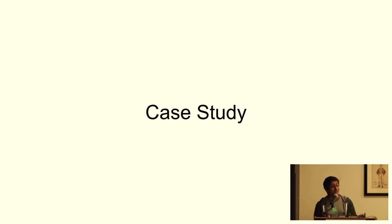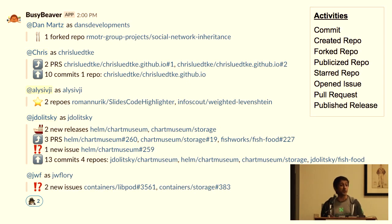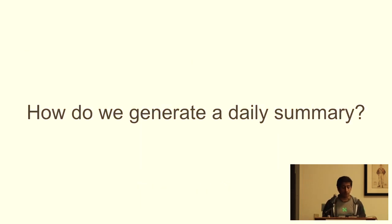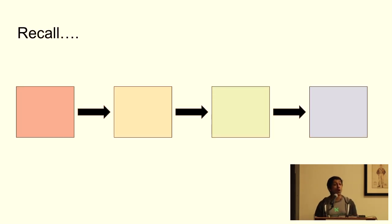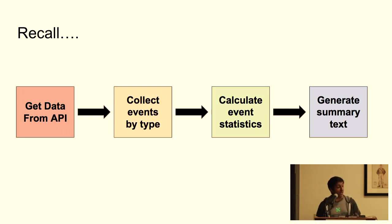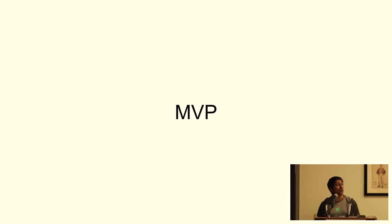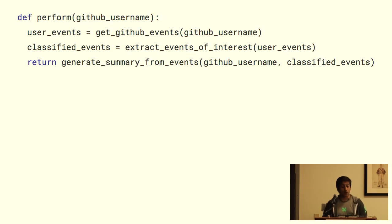Let's explore duplicate if statements with a case study. In the Chicago Python Slack, we have a community engagement Slack bot called BusyBeaver. One of the ways BusyBeaver engages the community is by sharing public end-of-day activity for registered users in a Slack channel at 2 o'clock every day. The algorithm to generate a summary for a single user: get data from the API, collect events we care about by type, calculate event statistics for each type, and then generate some summary text.